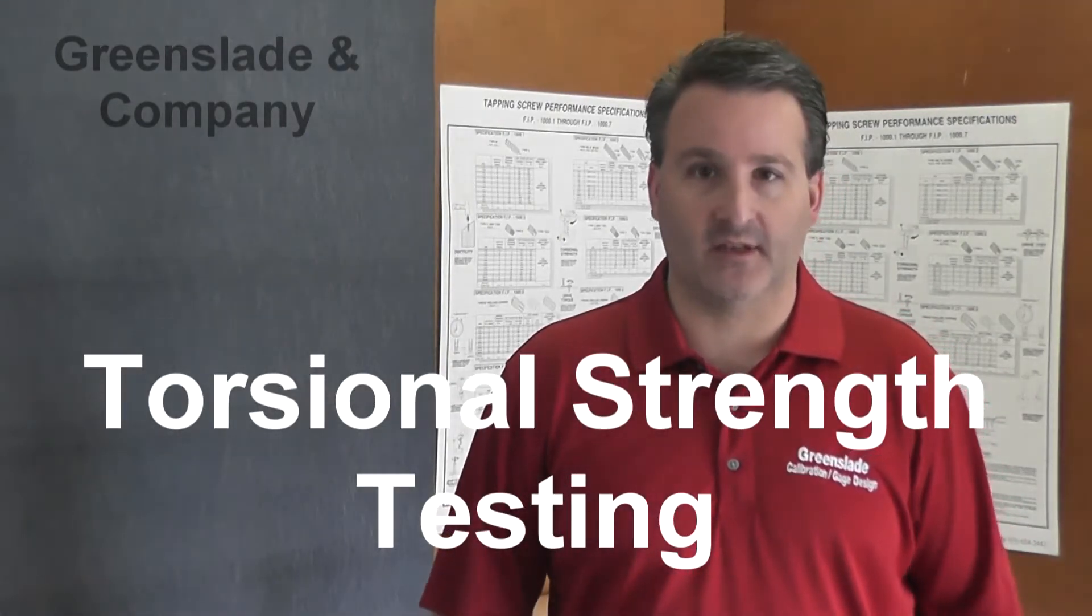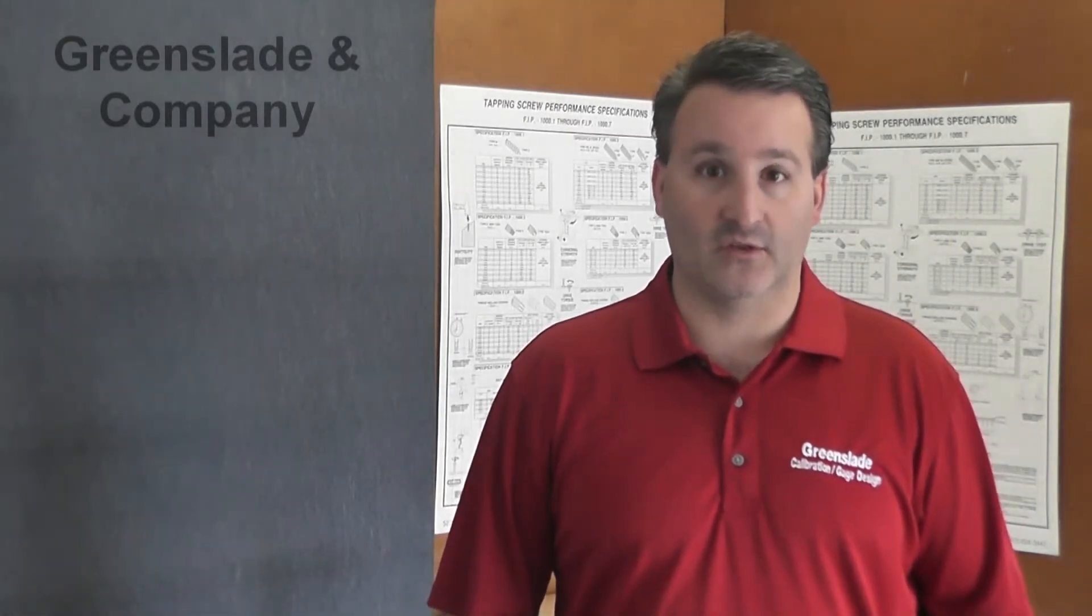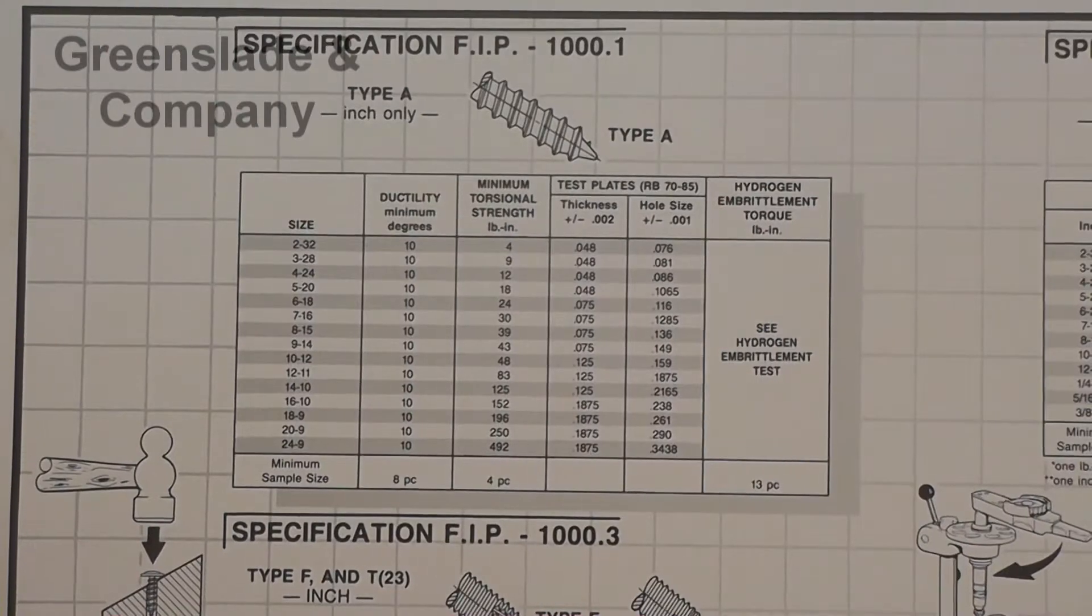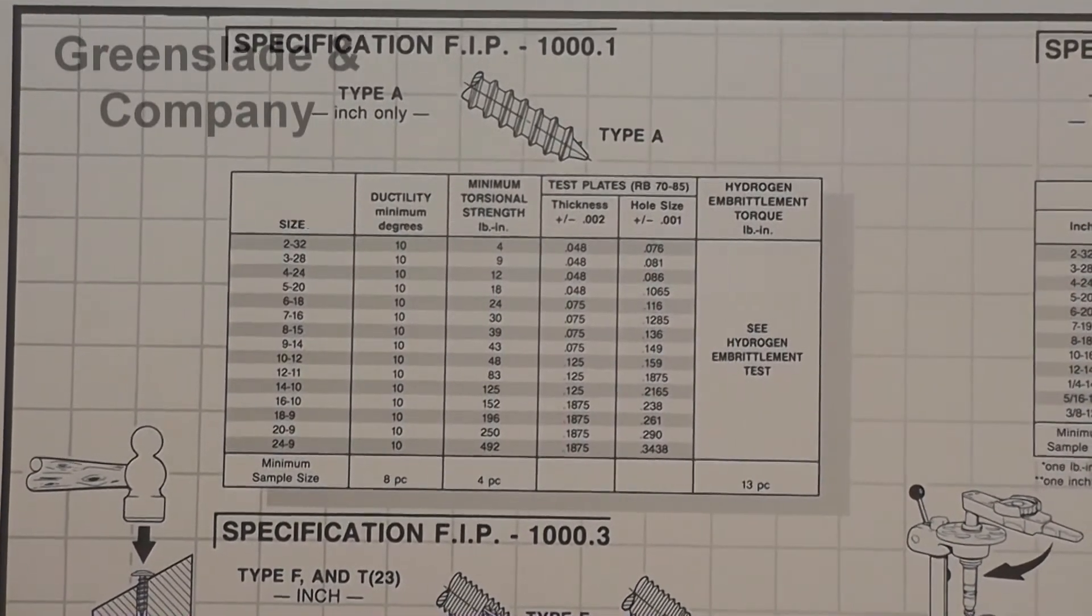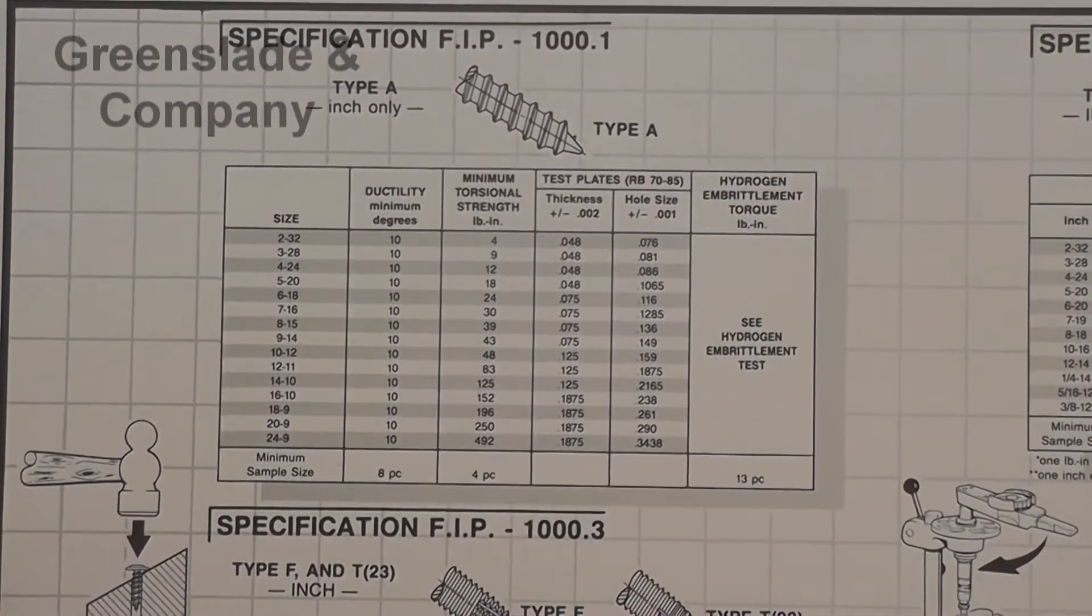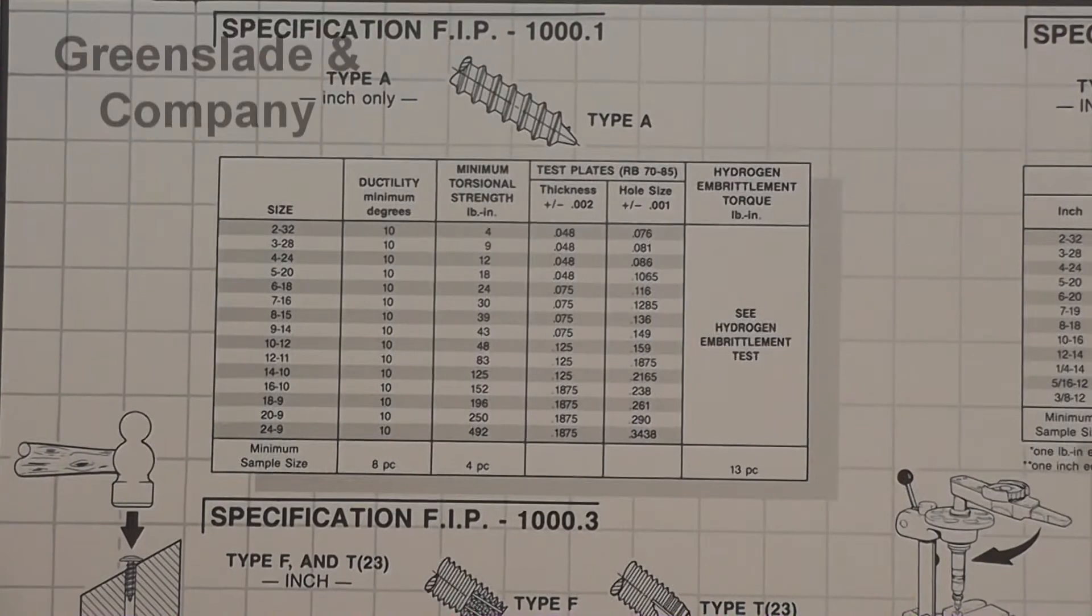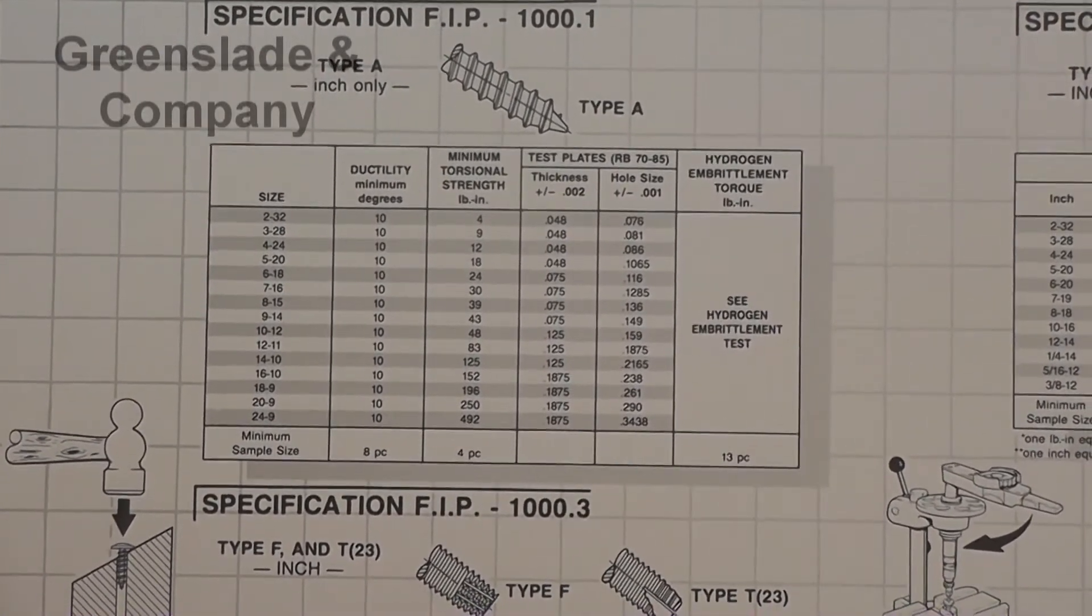Torsional strength testing measures a screw's ability to resist being twisted in two. We're going to be using Greenslade & Company's STF250 along with split collets today. Our screw samples are number 8 sheet metal screws, also known as type A screws.